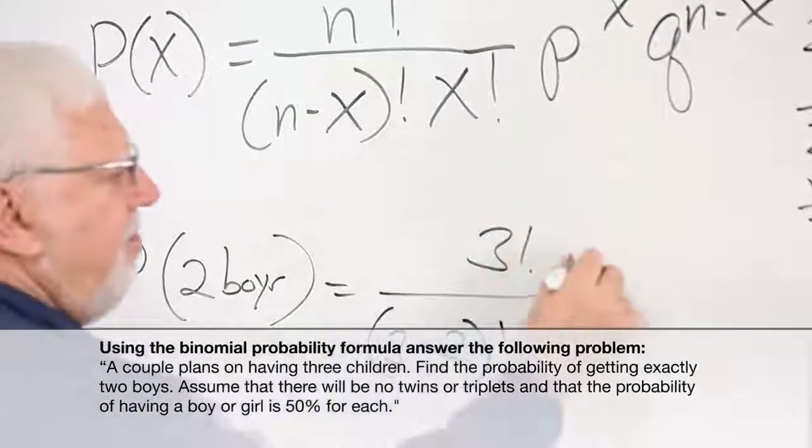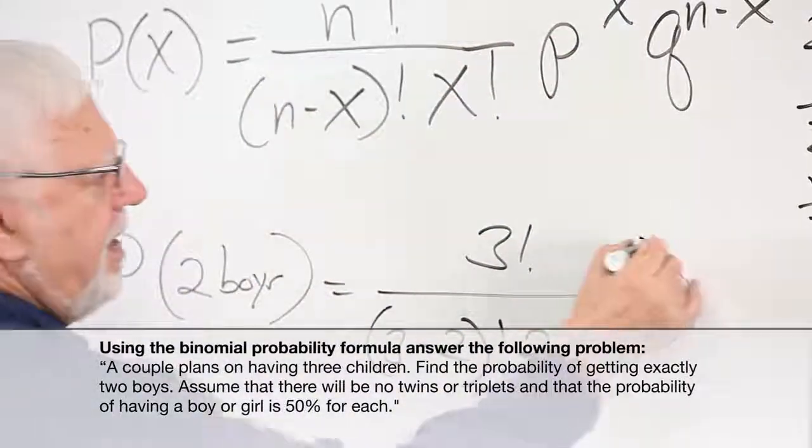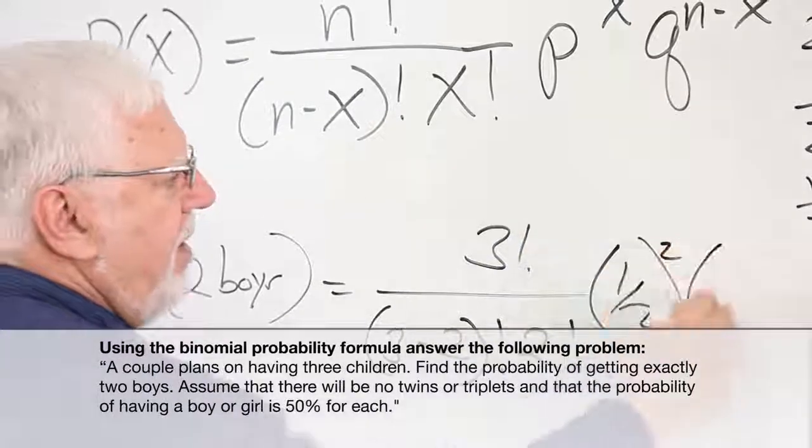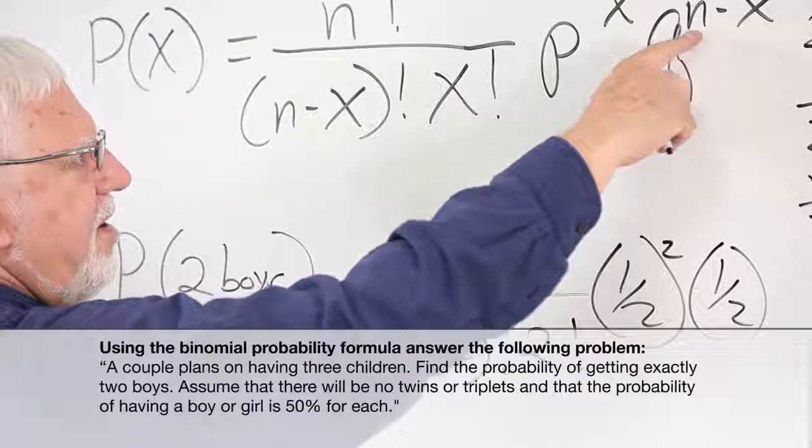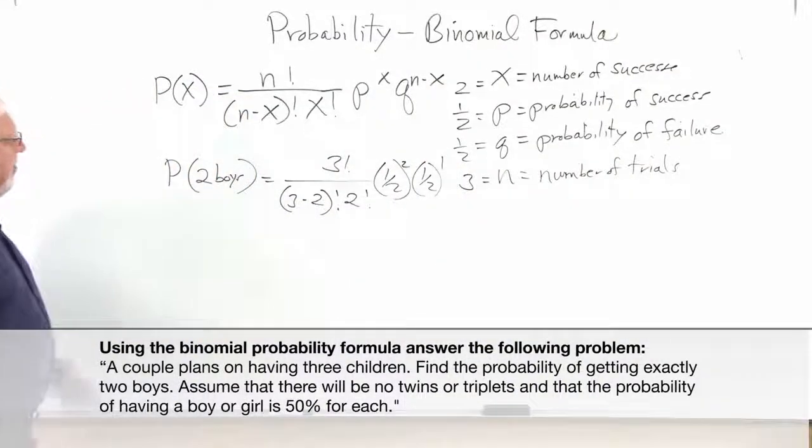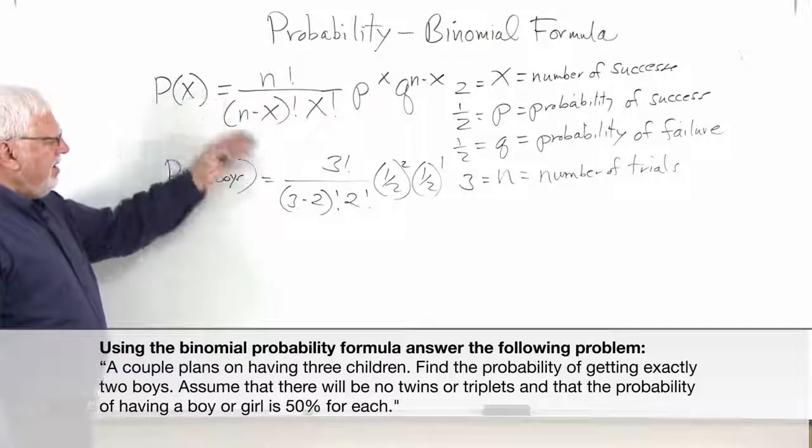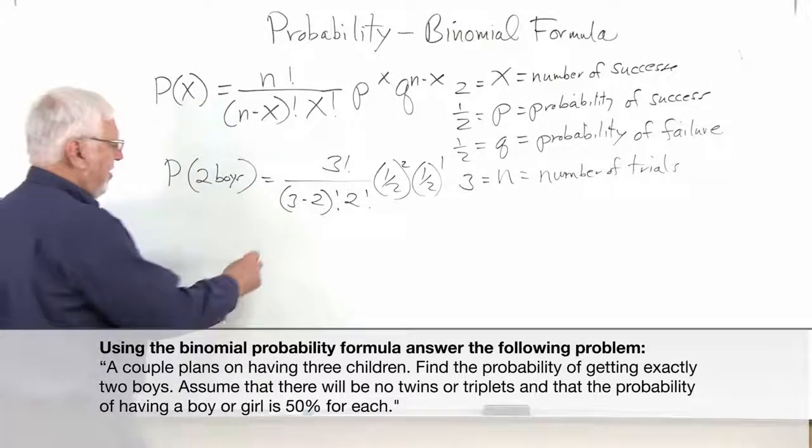So then our p is one half, our x is two again, and our q is one half. These are not always the same of course. And now this is three minus two or one. So then we have a fairly intimidating formula. Now it's supposed to produce exactly what the tree diagram showed us.